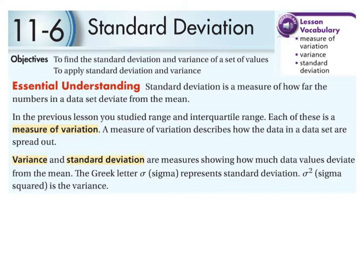Today we're going to be looking at standard deviation and variance and how we measure variation in a data set. Standard deviation is a measure of how far numbers in the data set deviate from the mean. In the previous lesson you looked at range and interquartile range. Those are also measures of variation. A measure of variation describes how the data in the data set are spread out.